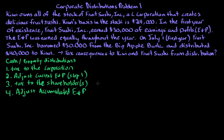You have to go through all four steps in order. If you go out of order, you will get the tax consequences with respect to all these items incorrect. Steps one, two, and four deal with Fruit Sushi, the corporation. Step three deals with Kiwi. But to get all the way to step four, we first have to determine step three — the consequences to the shareholder — before we can do step four.